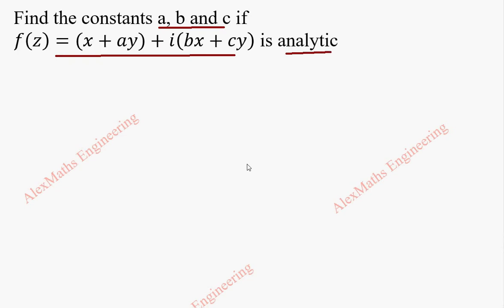So the given function f of z is u plus iv which is x plus ay plus i into bx plus cy. Now equating the real part on both the sides, u is x plus ay and v is bx plus cy.